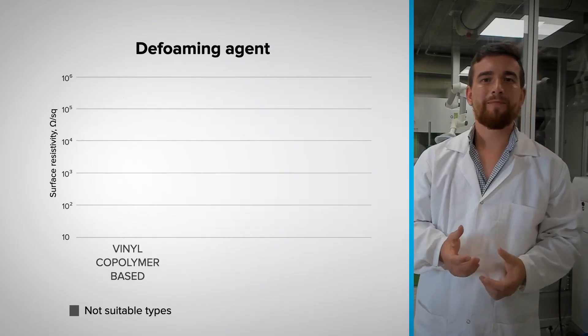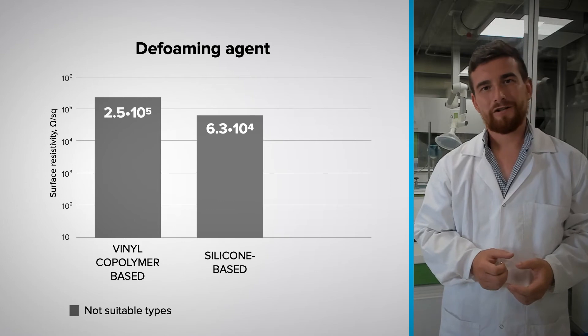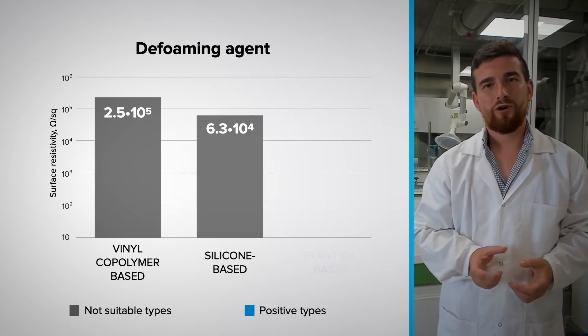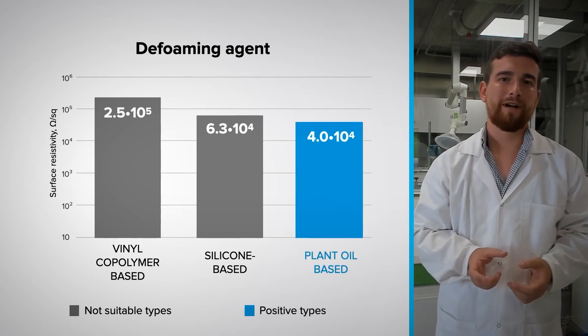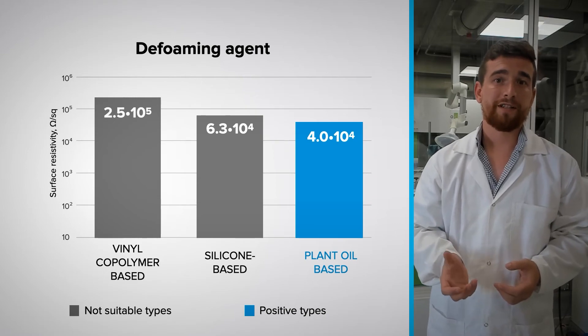For water-based primers, it's important to have a closer look at the defoaming agents. As seen from the diagram, defoaming agents based on silicon or vinyl co-polymer compounds show worse electrical properties in comparison with agents based on plant oils.